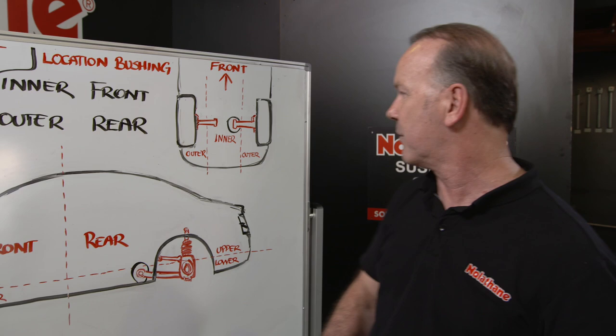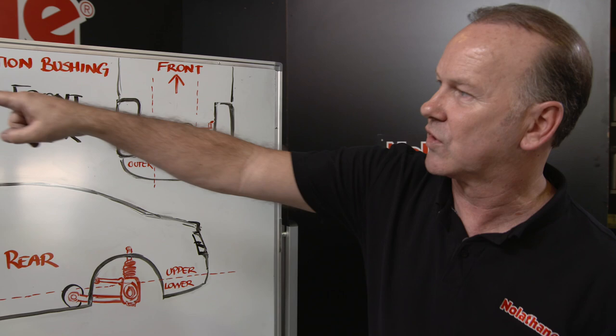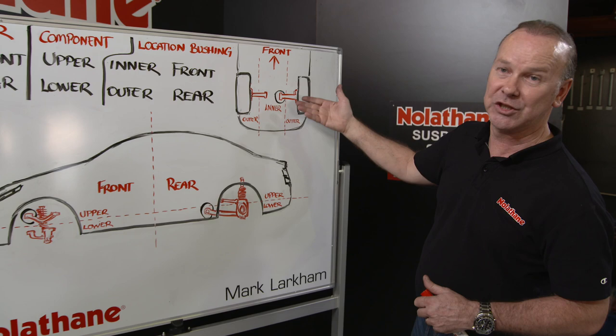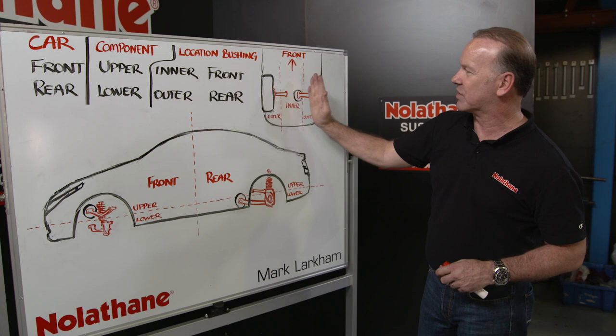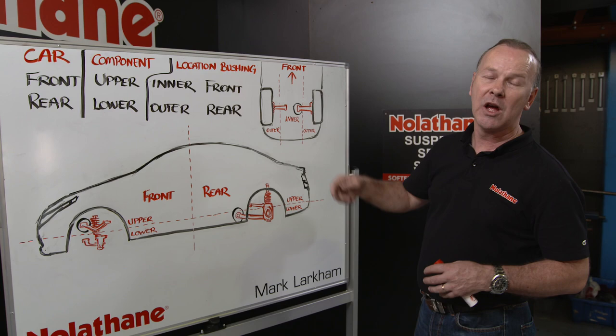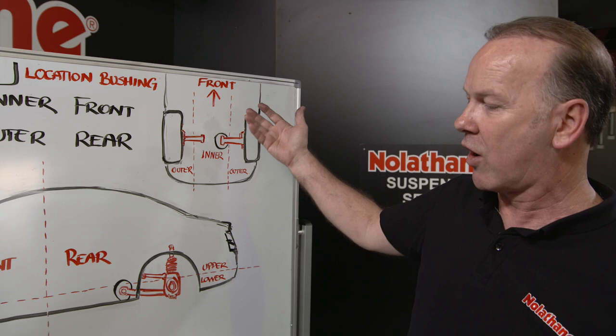Then if we go to the rear of the car and pick out this one, we can see again — start with the car: rear of car. Upper and lower — there's only a lower control arm here, so that doesn't apply. Inner and outer — it's obviously an inner towards the centre of the car. And front or rear — well in this instance there's only one control arm. Obviously in more complex rear-end systems there might be multiple control arms, which would require a bit more lingo.